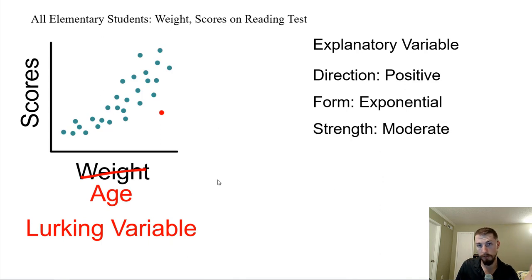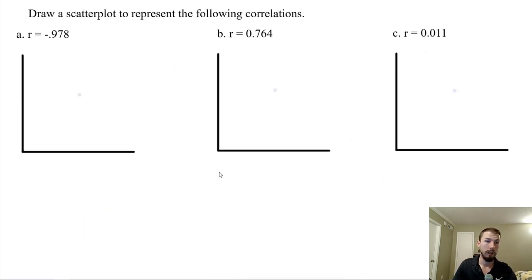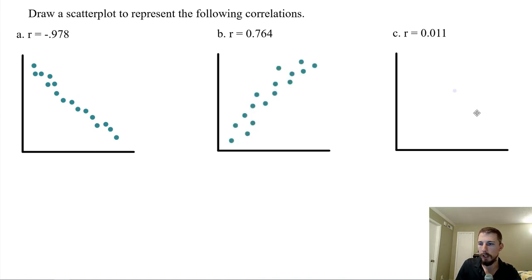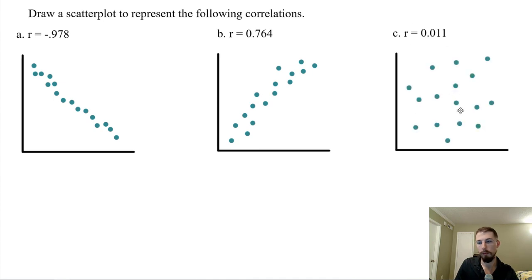In order to prove a causal relationship, we have to have randomly assigned treatment groups in a carefully designed experiment. We'll talk about that a lot in our third unit. So this is an example of a lurking variable — there are lots of other funny examples. To draw scatter plots: negative and really strong and linear looks like a tight downward line; positive moderate strength looks like a loose upward scatter; and almost zero is just random all over the place.